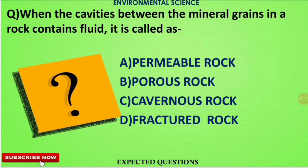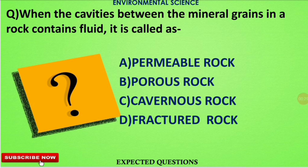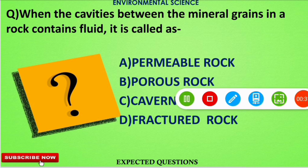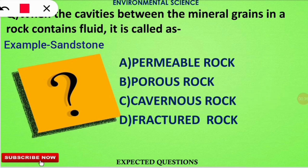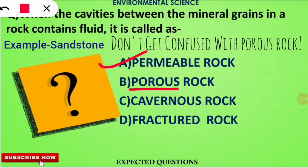The first question is: when the cavities between the mineral grains in a rock contain fluid, what kind of rock is it called? The correct answer is option A — they are called permeable rocks because they are porous in nature. That porous nature makes them permeable, and the mineral grains contain fluid.